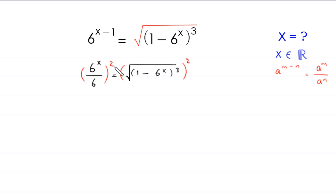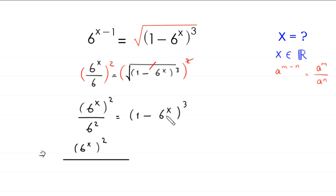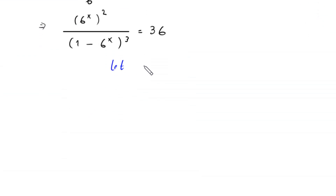On the left hand side, squaring gives (6 to the power x) squared divided by 6 squared. On the right hand side, the square and square root cancel, leaving (1 minus 6 to the power x) whole cubed. Since 6 squared is 36, this implies (6 to the power x) squared divided by (1 minus 6 to the power x) whole cubed is equal to 36.